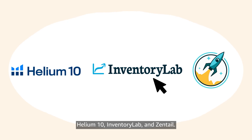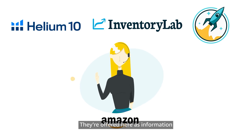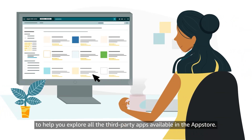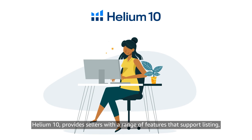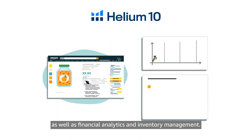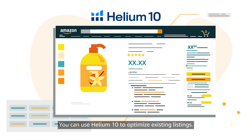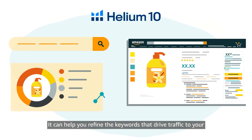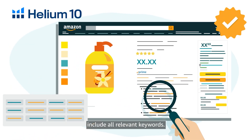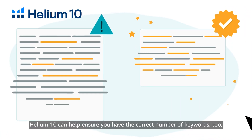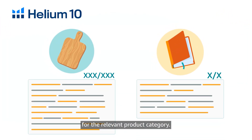Note that these examples don't constitute recommendations from Amazon; they're offered here as information to help you explore all the third-party apps available in the App Store. The first app, Helium 10, provides sellers with a range of features that support listing, as well as financial analytics and inventory management. You can use Helium 10 to optimize existing listings. It can help you refine the keywords that drive traffic to your product detail pages, and confirm that your product descriptions include all relevant keywords. Helium 10 can also help ensure you have the correct number of keywords and that you've adhered to the character limits for the relevant product category.